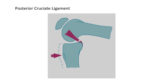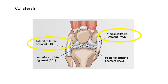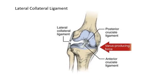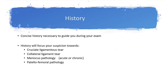The opposite is true for the posterior cruciate ligament or PCL: although it originates anteriorly on the femur, it attaches posteriorly on the tibia and gives you posterior translation when ruptured. Similarly, the medial collateral ligament is on the medial side of the knee and gives you medial opening when torn, while the lateral collateral ligament is on the lateral aspect and gives you lateral opening with a varus-producing force.